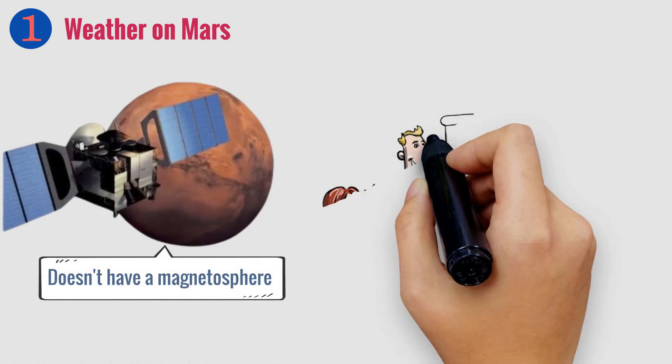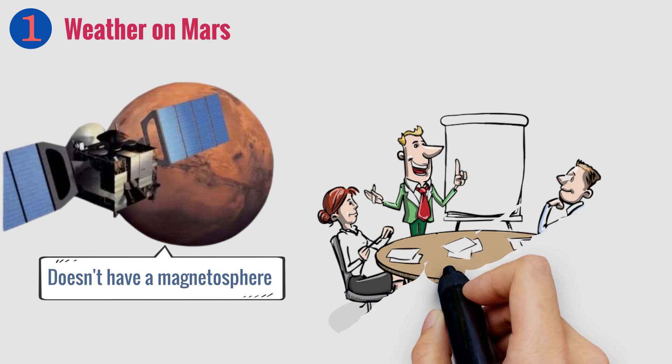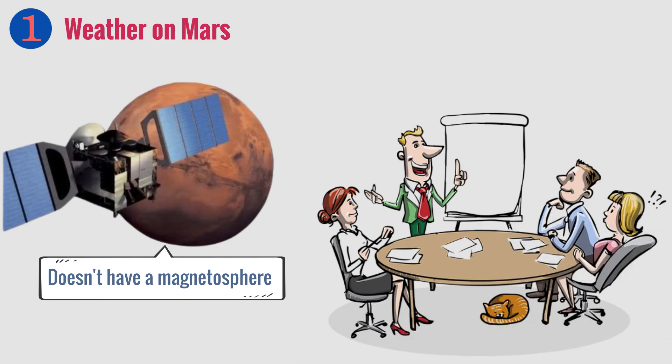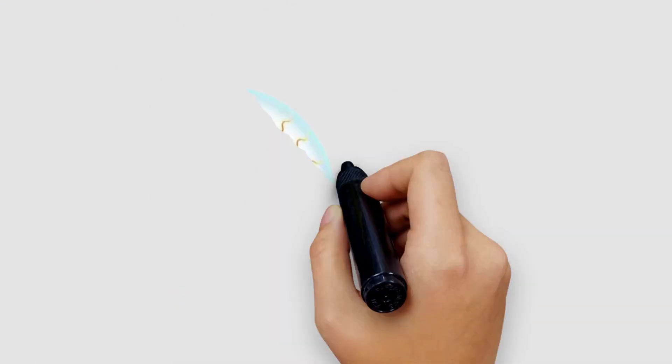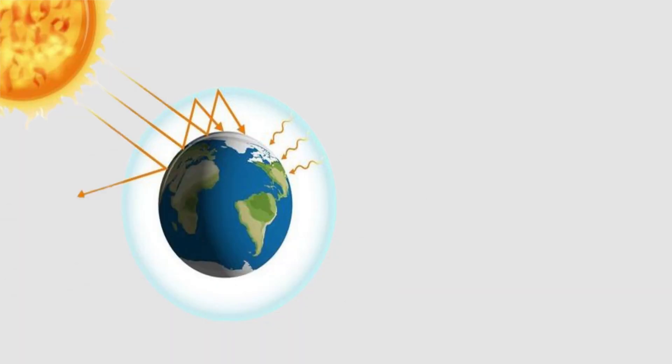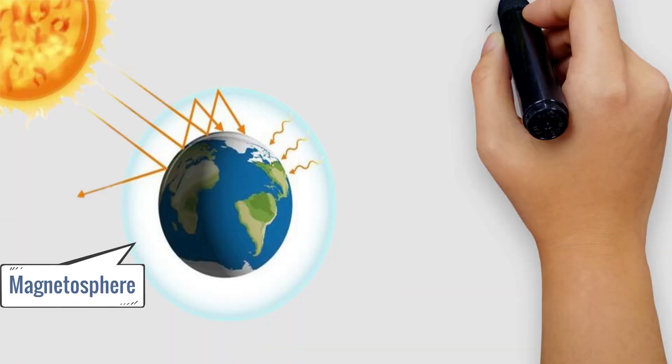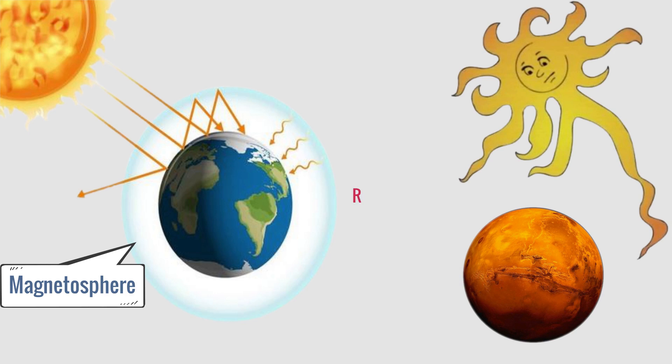Unlike Earth, Mars has no magnetosphere. In fact, according to many studies, Mars had a magnetosphere about 4 billion years ago, but it has been lost over time. But the magnetosphere plays an important role in blocking dangerous radiation from the Sun, plus the thin atmosphere of Mars makes the radiation on its surface many times higher than on Earth.